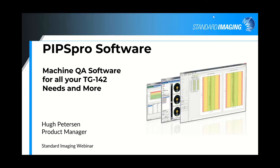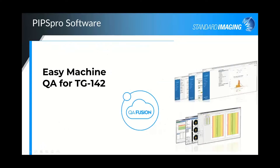Today I'm going to do just an overview of the PIPs Pro software. It's our machine QA software package covering a number of different tests for TG142 and beyond. We can also incorporate that into what we call QA Fusion, which is a combination of our PIPs Pro software and an automatic push into our QA Pilot software — our QA database management software. We do have webinars on QA Pilot scheduled as well, and you can check our website for that.